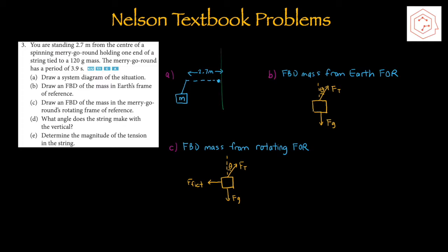Part B: draw a free-body diagram of the mass in Earth's frame of reference. This is an inertial frame so there's no fictitious force — only the tension force acting diagonally, making an angle theta with the vertical, and the gravitational force straight downwards. Part C: free-body diagram in the merry-go-round's rotating frame of reference. From the rotating frame, we still have the tension force diagonally upwards and gravitational force downwards, but additionally the fictitious centrifugal force outward from the center of the circle.